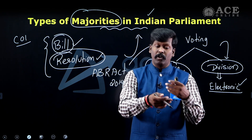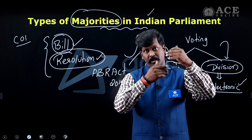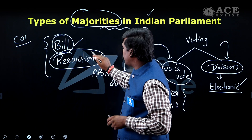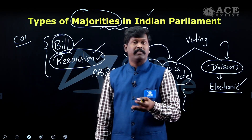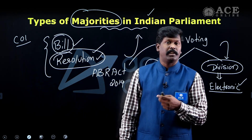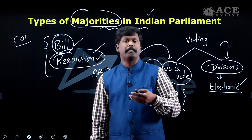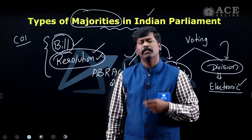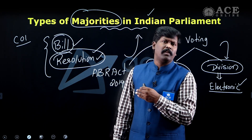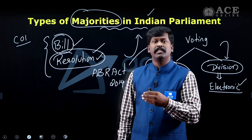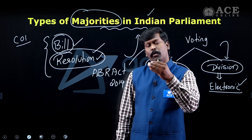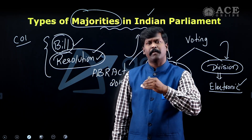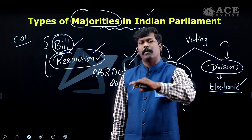Article 124 covers the removal of judges. There are also various motions — call-attention motion, privilege motion, and censure motion — and these motions are governed by rules written in the rules book. Let us now understand what simple majority means.